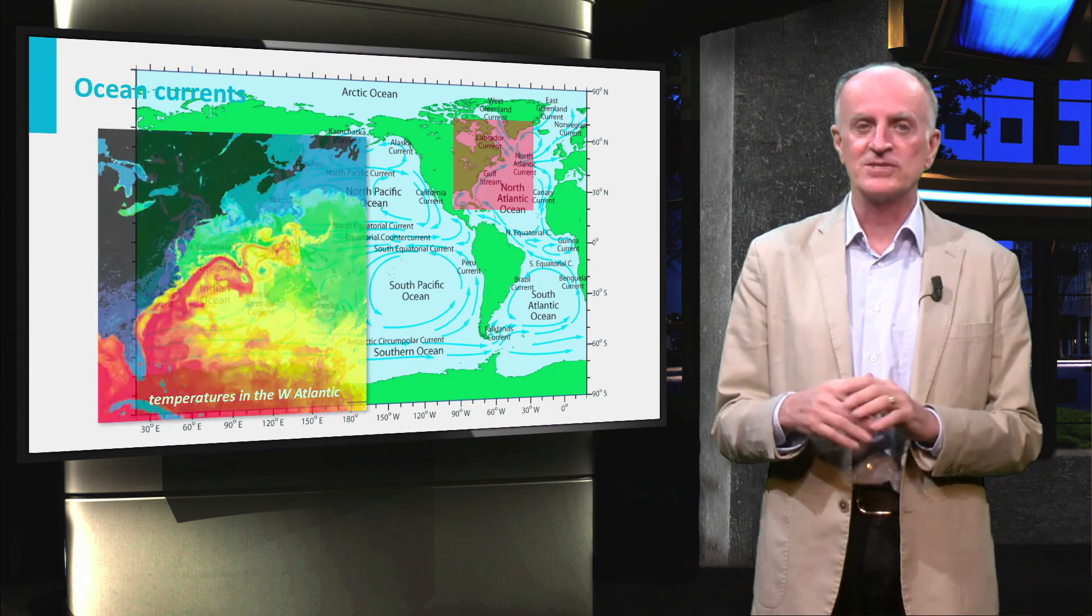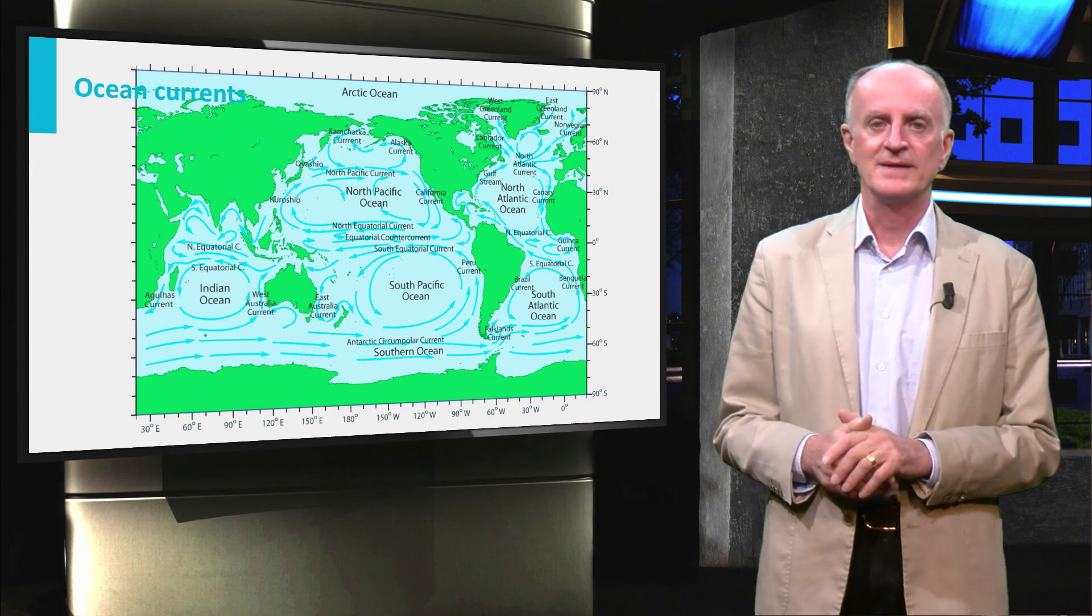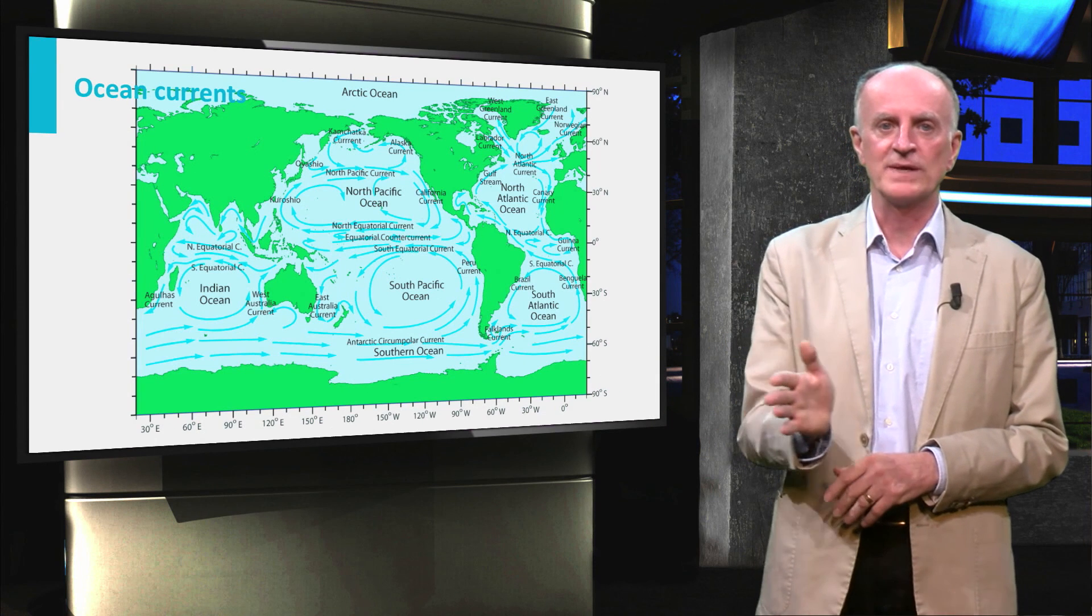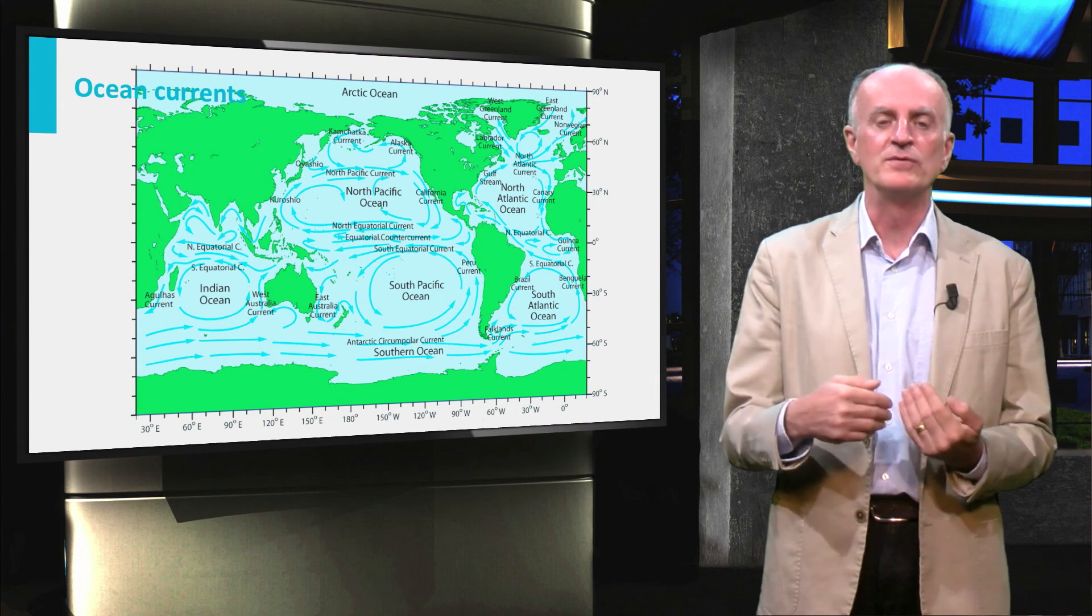Large scale ocean currents are essentially driven by winds. In the equatorial region, they will be pushed by the westerlies towards the west. In the tropical region, they will on the contrary move eastward.